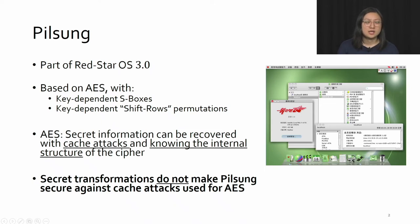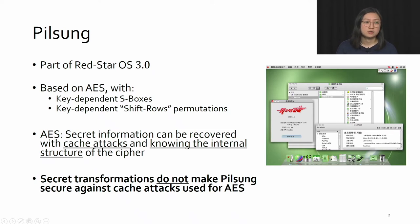PoSung is based on the AES cipher, with the main differences of having key-dependent S-boxes and key-dependent shift row permutations. With AES, secret information can be recovered with cache attacks, also because we know the internal structure of AES. In the paper, we find that secret transformations do not make PoSung more secure against cache attacks used for AES. For the remainder of this video, I'll start with a refresher on AES, then introduce a cache attack for AES, and then go into how that can be adapted for PoSung.